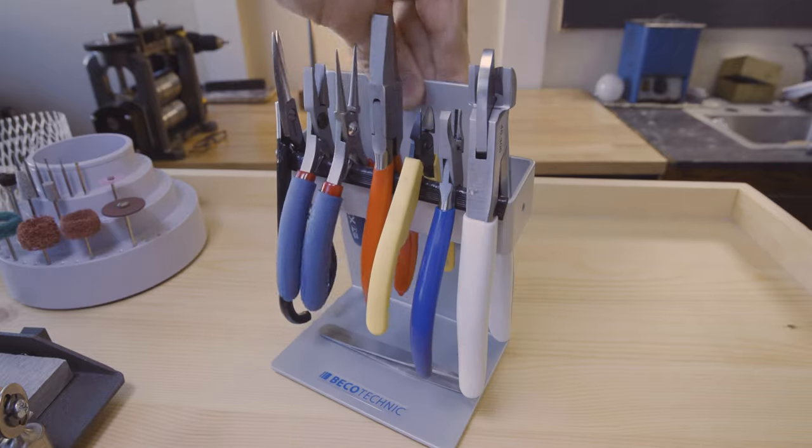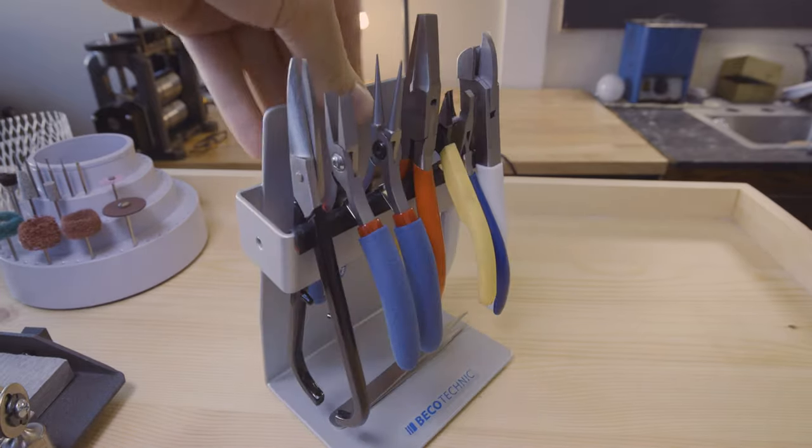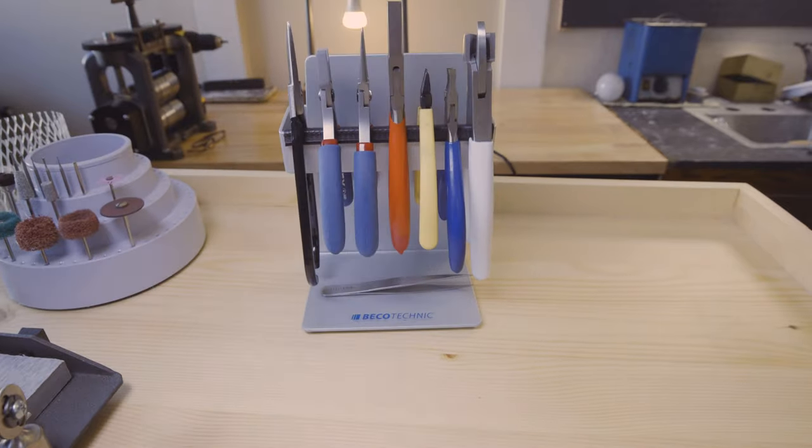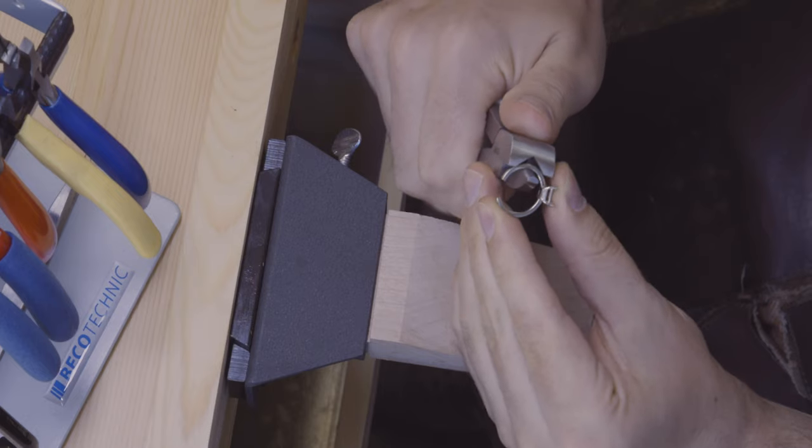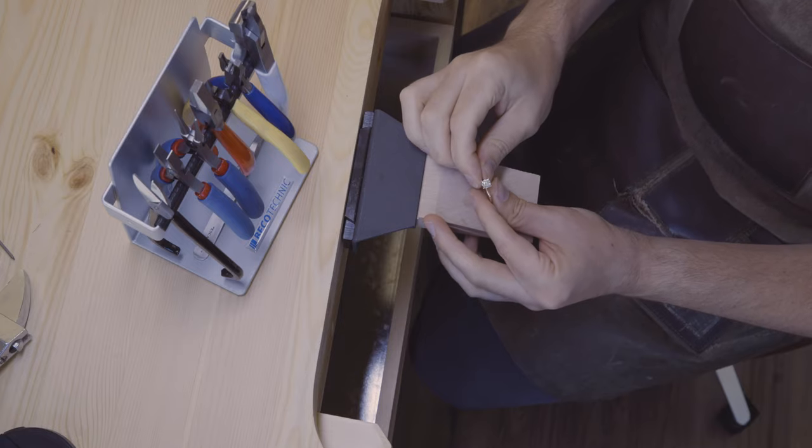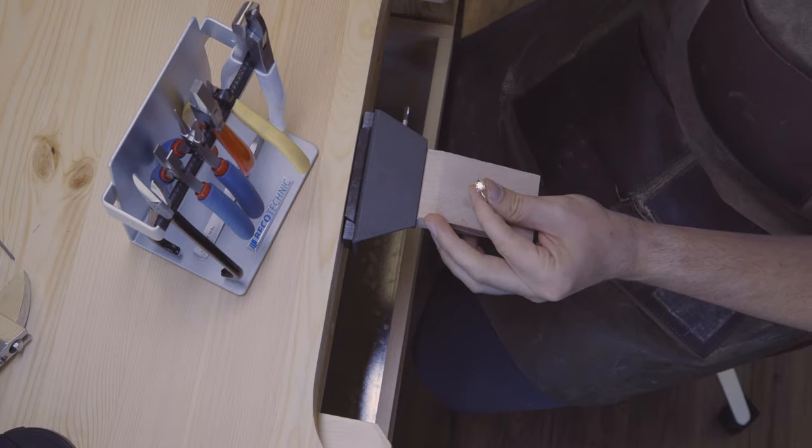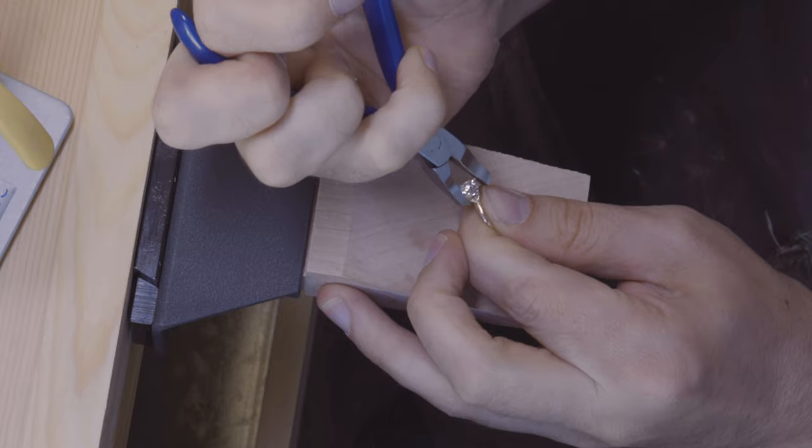Next up we have hand tools and what a joy they are. There are many ways to store them but I really like this weighted benchtop stand. Let's go over some of the essentials. First up we have ring bending pliers, doing exactly that. Stone setting pliers, perfect for tightening and setting stones. Probably not the most beginner tool on this list but hey, I love them that much.